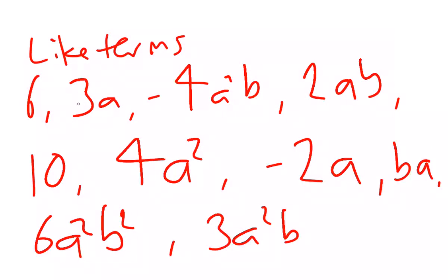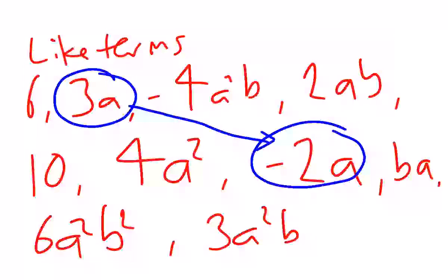They're like terms if the pronumeral part of the term is completely the same as the pronumeral part of another term. So let's go with a nice easy one. Here we have 3a. The only pronumeral there is a. That's the same as the a in negative 2a.